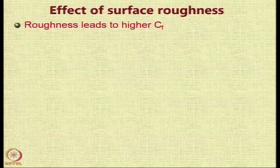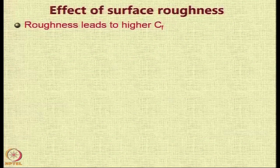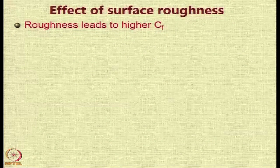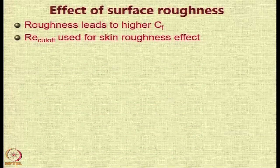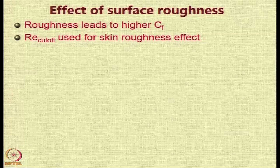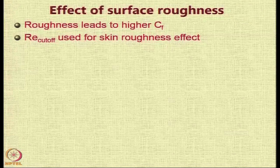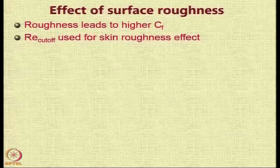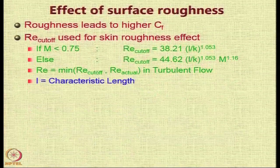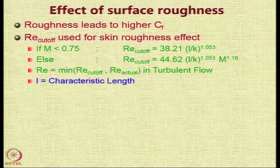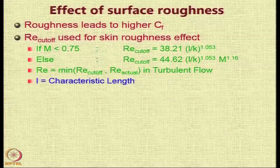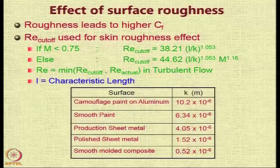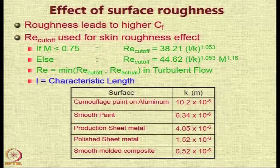Surface roughness leads to a higher value of the skin friction coefficient. To account for this effect, we use the concept of the cutoff Reynolds number. If the Mach number is less than 0.75, the cutoff Reynolds number is defined in terms of L over K, where L is the characteristic length of the component and K is the surface roughness.